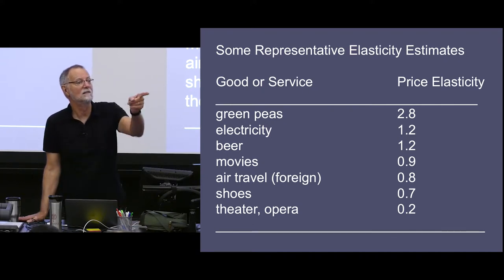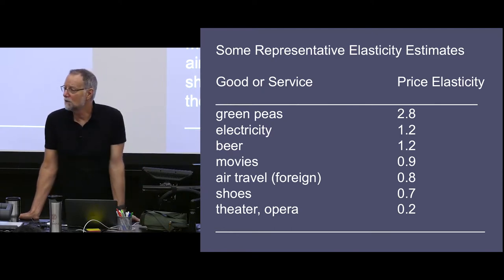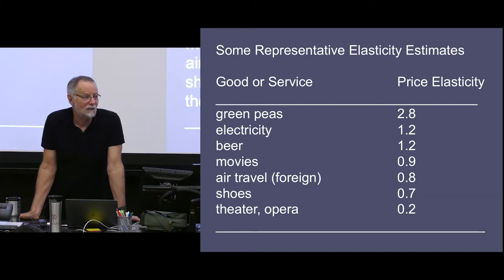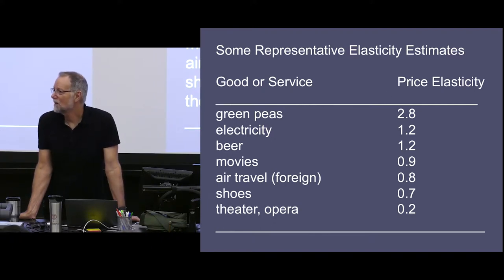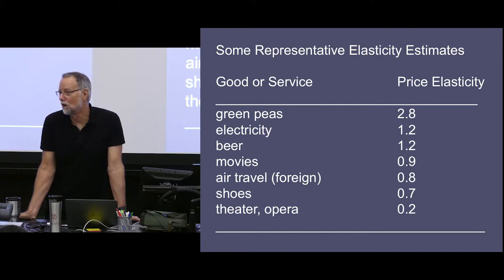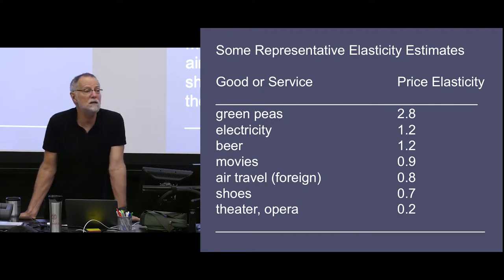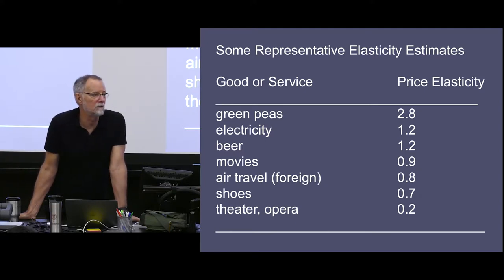Substitution is part of the story. If the price of green peas goes up, you don't starve — you say 'what else you got?' Kale, green beans, spinach — there are lots of things that do roughly the same job. You switch and don't feel aggrieved. But if you want to see Hamilton and they raise the price, there isn't a really good substitute for that experience.